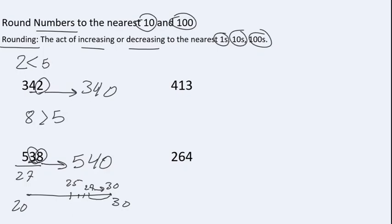Now we move to the numbers four hundred thirteen and four hundred sixty-four. In this case, we round them to the nearest hundreds. When we round numbers to the nearest hundreds, we underline the digit in the hundreds place and compare the digit in the tens place with five. In this example, the digit in the tens place is one.